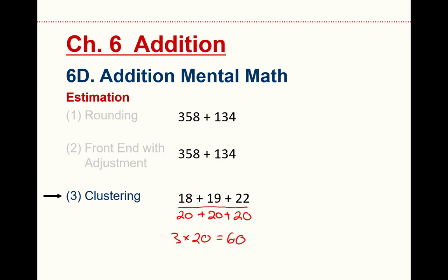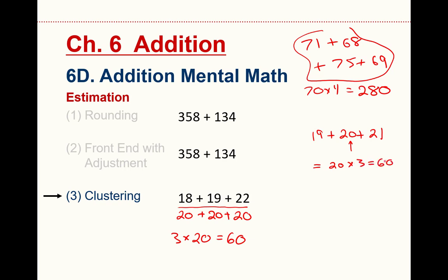So you can turn this addition problem into multiplication. If I have 71 plus 68 plus 75 plus 69, these four numbers, they're roughly about 70. So what's my solution? It's about 70 times 4, or 280. That's pretty nice, right? I didn't have to add those four numbers together. Clustering is useful with consecutive numbers, too. Suppose I have 19 plus 20 plus 21. Consecutive numbers, symmetric about 20. The answer really is 20 times 3, which is 60.